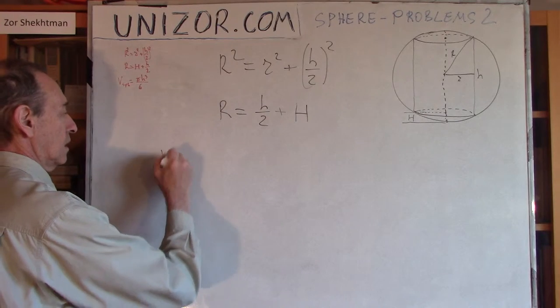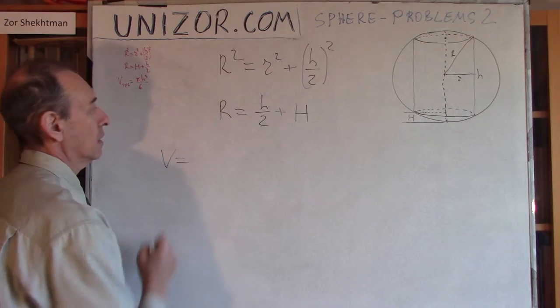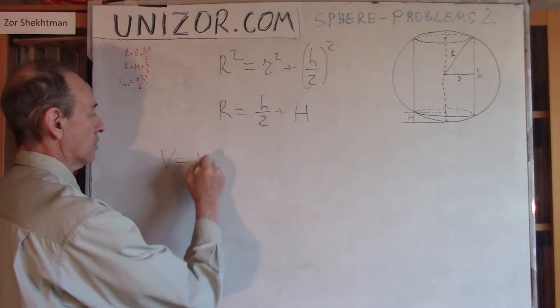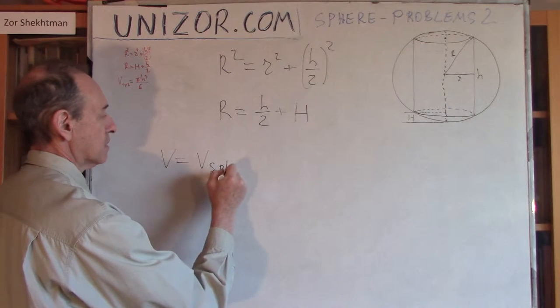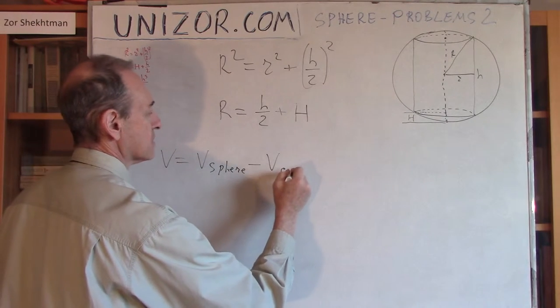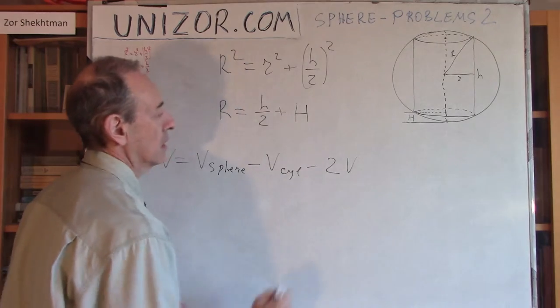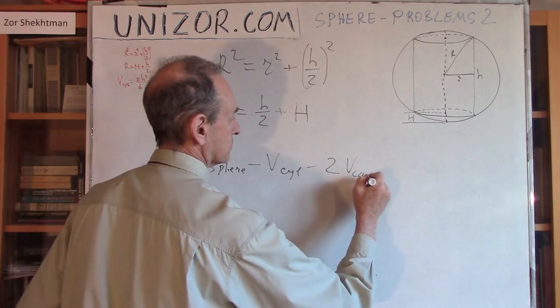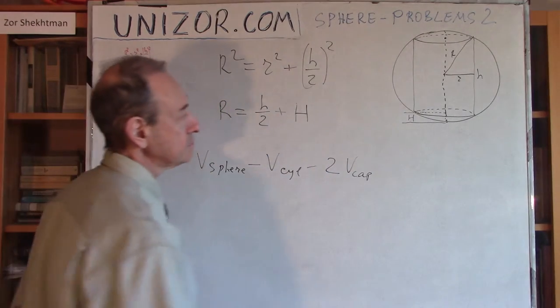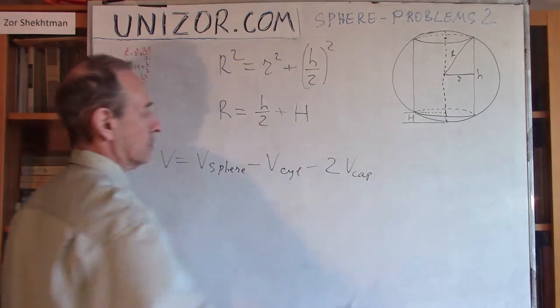Well, the V, which is the volume of the remaining part, after the drilling is equal to volume of the sphere, minus volume of the cylinder, and minus two volumes of the caps. Right?